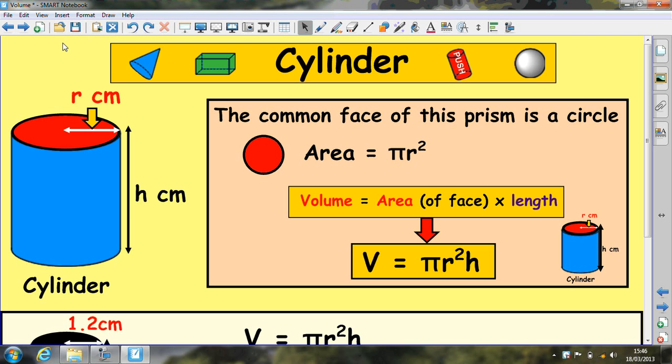From the previous lesson you should see that the cylinder is just a type of prism. We've got the area of the face at the top, which is a circle, times the height.